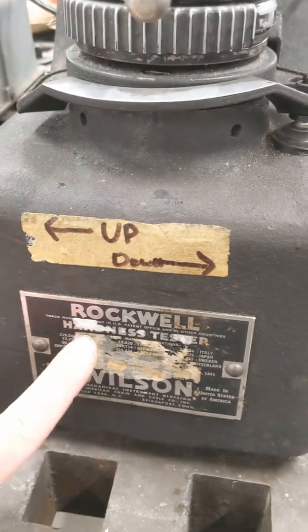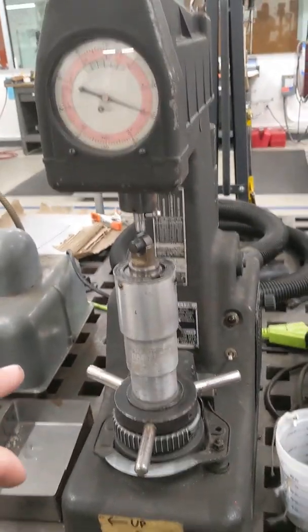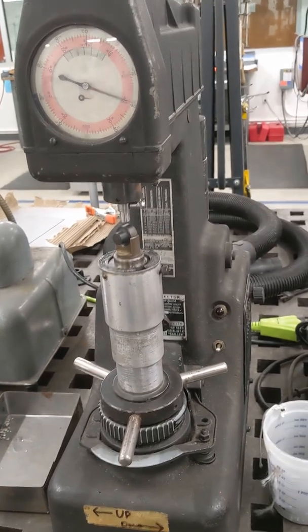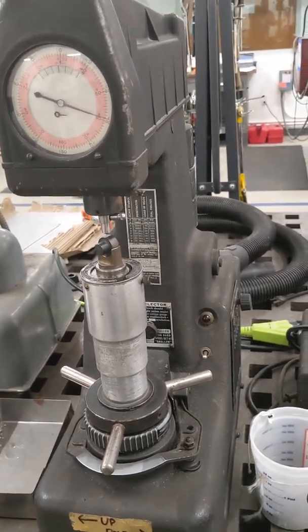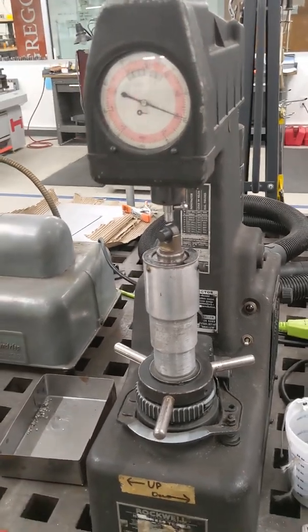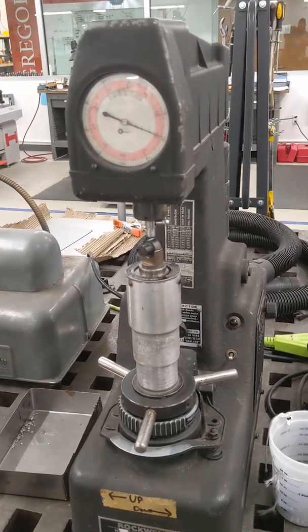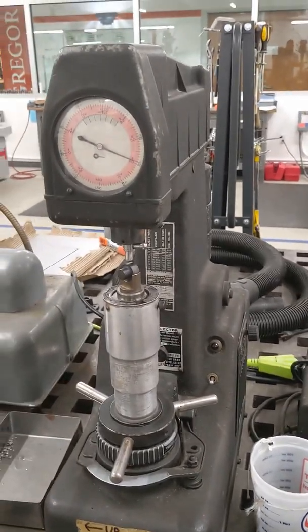This tester reads in the Rockwell scale, and it is set up to read in the Rockwell C scale, which is useful for measuring steels primarily. Steels fill the Rockwell C scale across their entire span, with soft steels at the bottom of the scale and hard steels at the top.